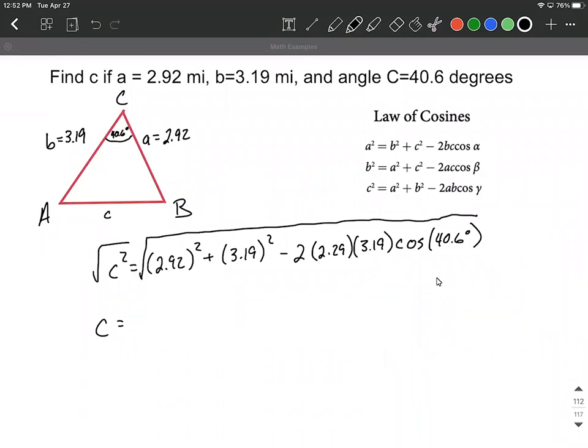After we press enter I'm going to get 2.13484 and this keeps going on. Keep as many decimal places as you need. That's going to be in miles because each one of these other side lengths was also in miles.